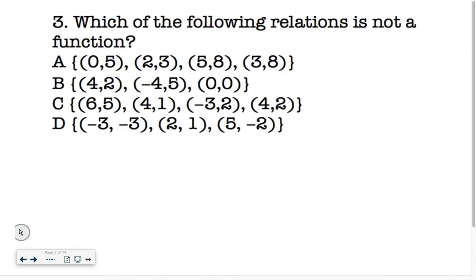Next one, which of the following relations is not a function? So remember the rule back in the beginning. If it has a repeating x value, then it's not a function. So if all of the x values are different, then it would be a function. So for this one, it's 0, 2, 5, and 3. That's okay. None of those repeat. For this one, it's 4, negative 4, 0, 4, negative 4, 0. All of those are different, so that's okay.